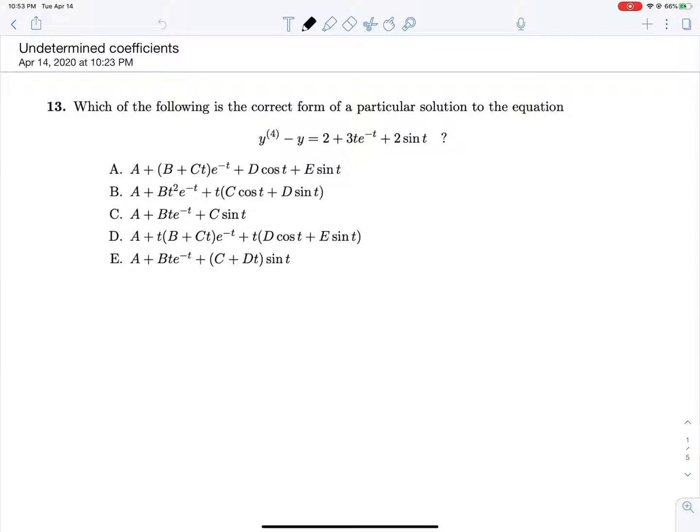Which of the following is a correct form for a particular solution of this equation. So right off the bat, we really do need to know whether or not our characteristic solution has any overlap with what we have here, because if it doesn't, then the form that we'd like our guess to be in, which is what all of our answer choices are, YPG, the guess for our particular solution, would just be A plus BT plus C e to the negative T plus D cosine T plus E sine T.